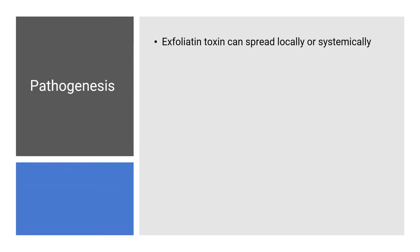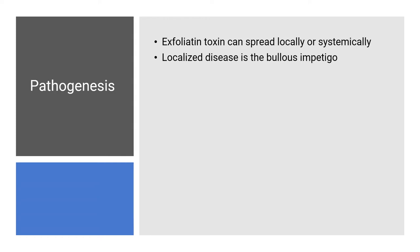How does the toxin work? The exfoliating toxin produced in the wound or the umbilicus has to spread. It can spread locally or systemically. If it spreads locally, the outcome is the localized disease known as bullous impetigo — there are bullous lesions in a localized area of the skin. But systemic spread results in the disease we are discussing: Staphylococcal Scalded Skin Syndrome.